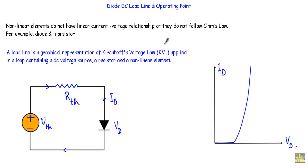In this video I will talk about diode DC load line and operating point. We use the concept of load line in a circuit which contains only one nonlinear element. Nonlinear elements do not have a linear current-voltage relationship — that means the current will not be directly proportional to the applied voltage, or in other words, they do not follow Ohm's law.